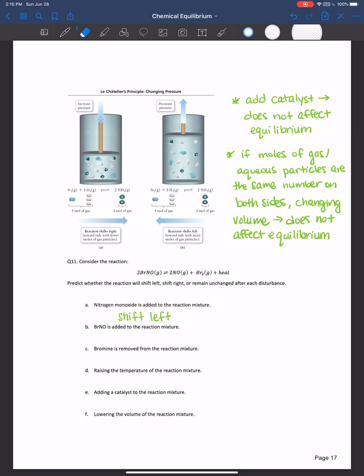What if we were to add more of that reactant? If we added more of this, it would shift to the right. Let's say bromine is removed from the reaction mixture.